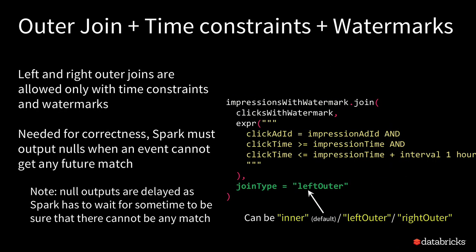That was inner join. We also support outer join, but there's a subtle difference. In the case of outer join, you want to record impressions that did not result in a click — for statistics purposes, to see your click-through rate. So for every impression, you wait for a maximum period of time until it sees a click, after which it times out and returns an outer result of impression and null. For this to work correctly, the engine really needs to know those time constraints after which it can give up that this impression is never going to get a click.